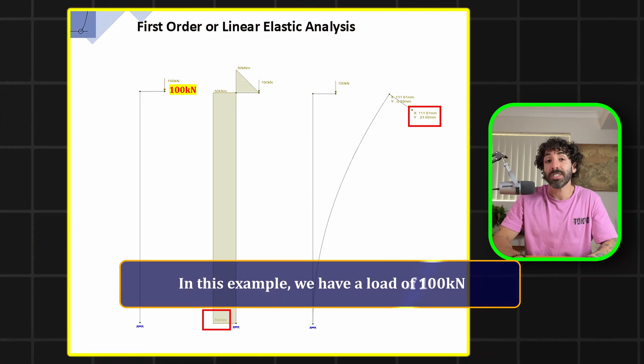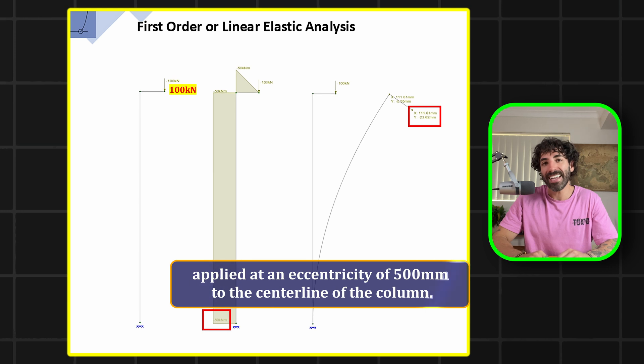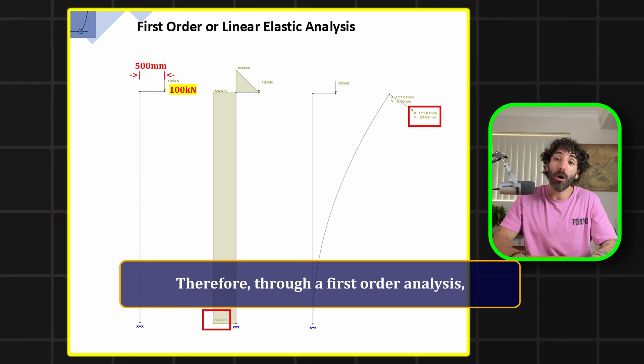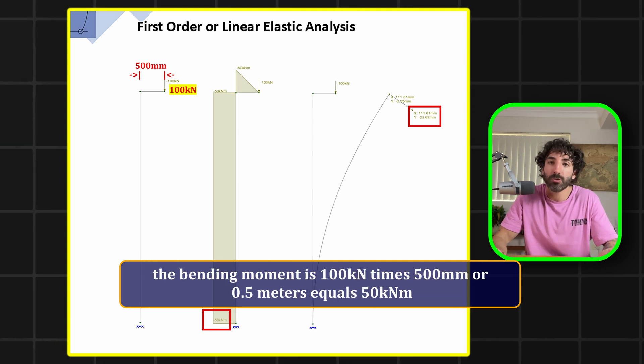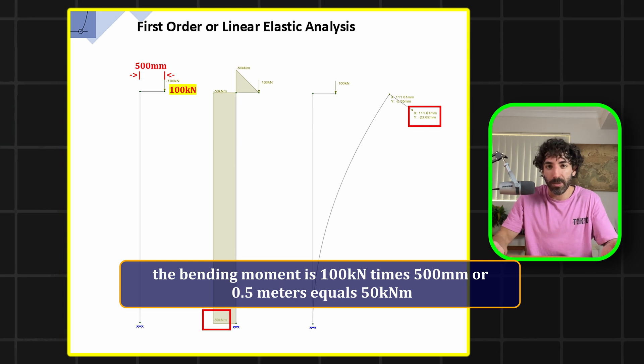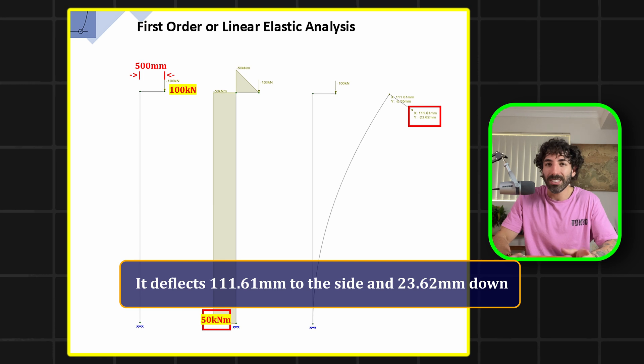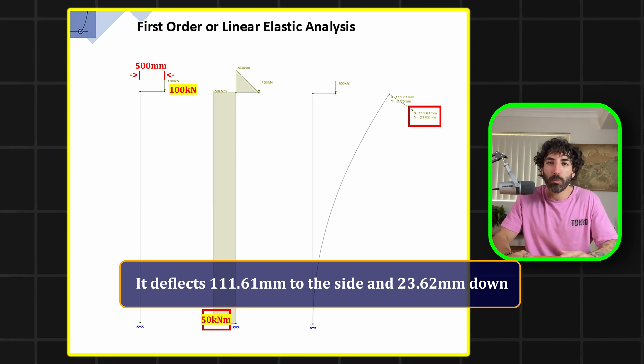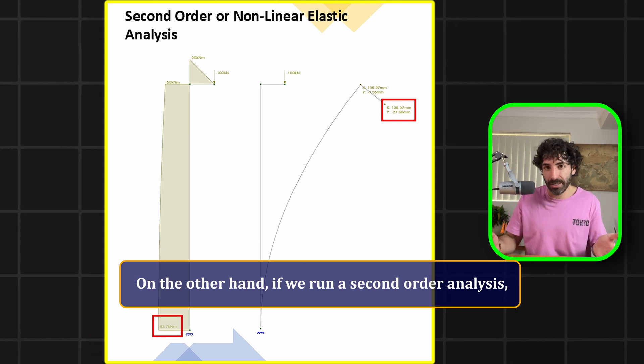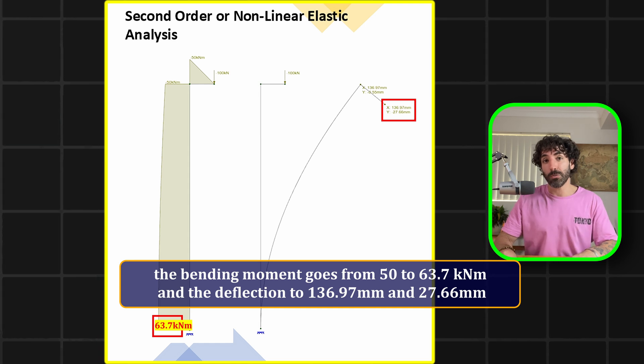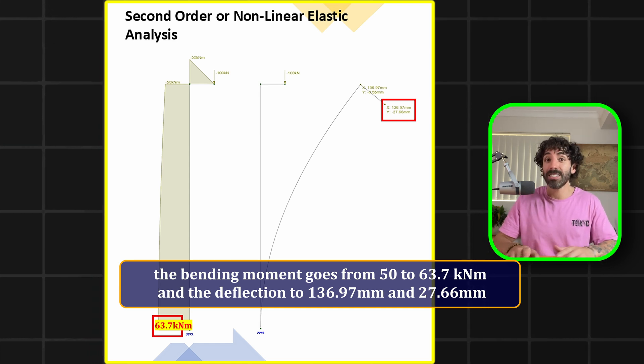There are two ways to account for second-order effects: run a first-order analysis and apply a moment amplification factor, or run a second-order analysis directly. Most modern software includes second-order analysis, so if you're modeling the structure you might as well use it. For example, with a 100 kN load applied at 500 mm eccentricity, a first-order analysis gives a bending moment of 50 kNm and a lateral deflection of 111.61 mm. A second-order analysis increases the bending moment to 63.7 kNm and deflection to 136.97 mm — a significant difference.